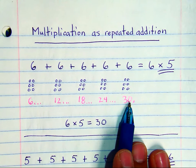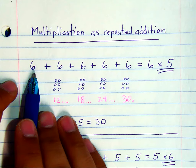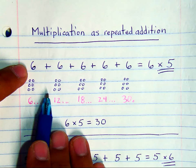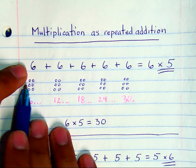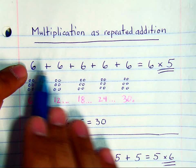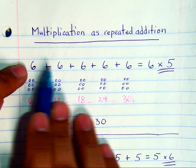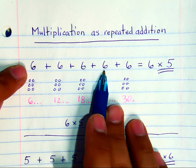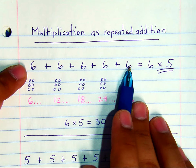When you have a group of 6, 6, 6, 6, and 6, you have 5 groups of 6. Now, instead of writing 6 plus 6 plus 6 plus 6 plus 6, you write 6 times 5.